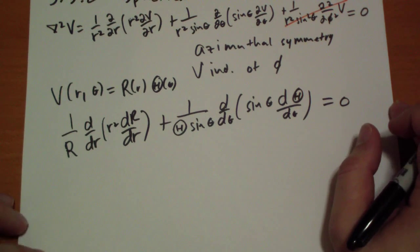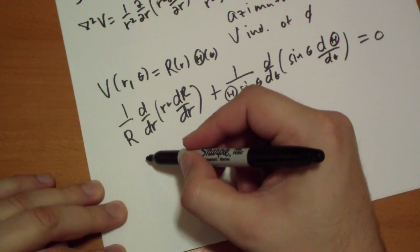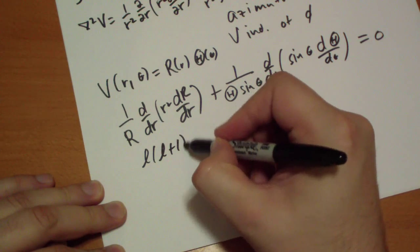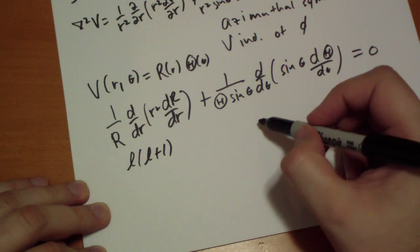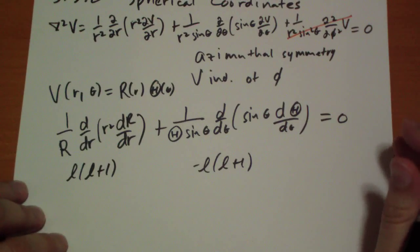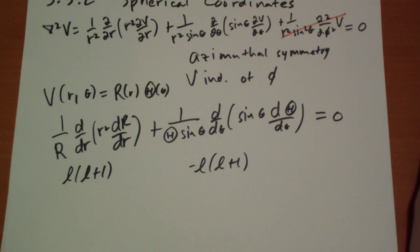And the thing that he uses is he says, let's set this equal to l times l plus 1, and let's set this equal to minus l times l plus 1. And unless you've done these problems before or seen someone do them, I don't know how you're going to come up with that. So, kudos to the first person that figured this out.